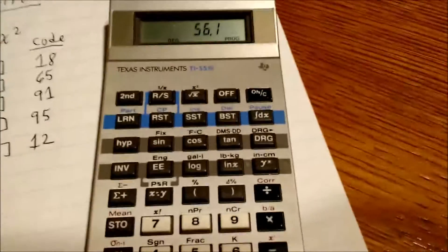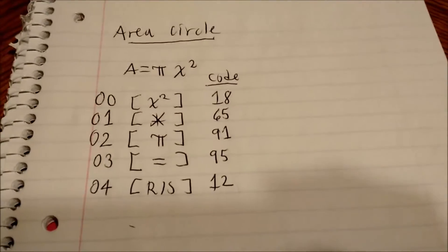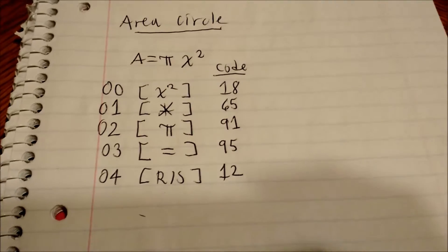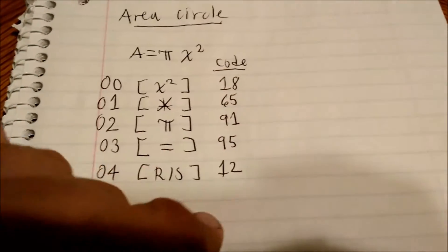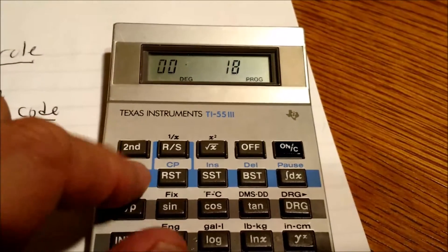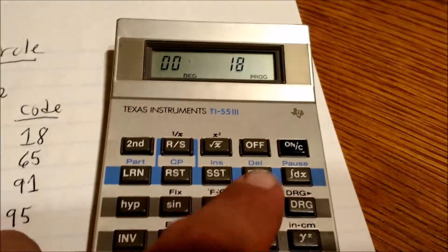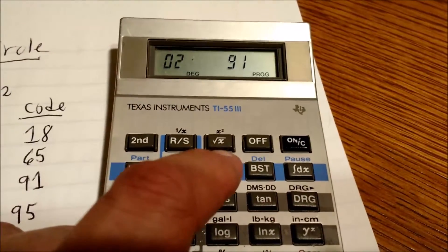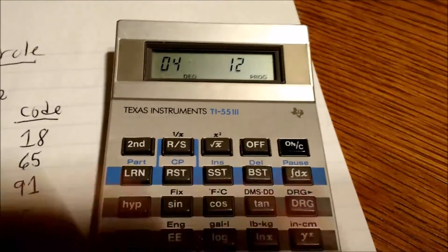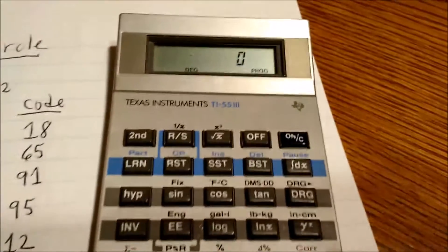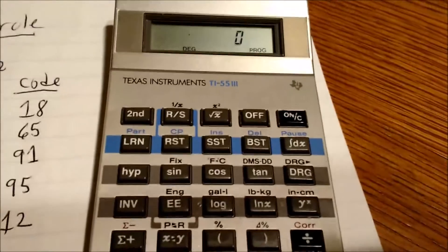And, I've done a program for you. The area of the circle where you take the radius, square it, and multiply it by pi. Pretty simple program. Here are the codes. I'm going to press the reset button, and then the learn, just to show you that the steps are in there. Single step. Pretty simple. I'm going to go back out of learn mode. Press reset to set the pointer back to zero.